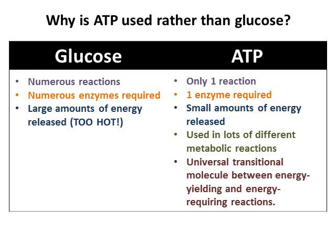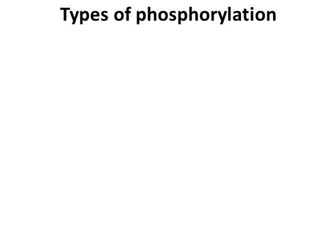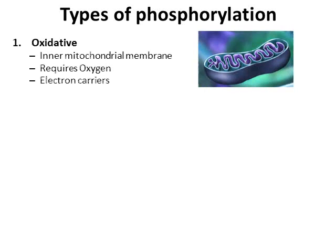ATP acts as a universal currency for lots of different metabolic reactions. Phosphorylation simply means adding a phosphate. This is basically how ATP is generated by the cell. Although it's generated in the process of respiration — glucose is used to produce ATP from ADP and Pi — there are a number of different types of this phosphorylation.